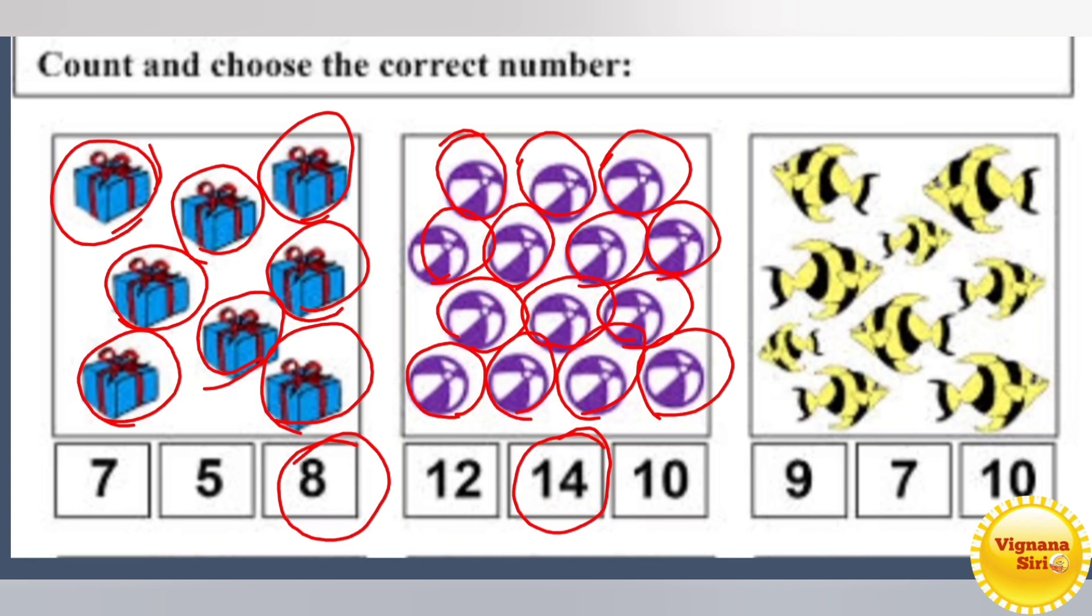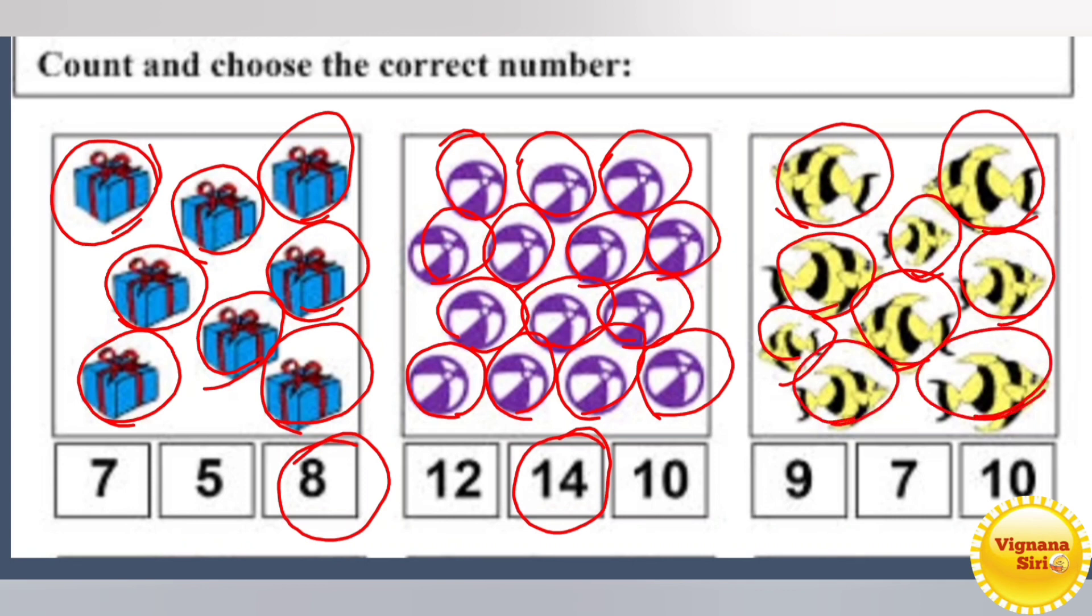Now the next one. What are those? Those are the fishes. Now count the fishes. 1, 2, 3, 4, 5, 6, 7, 8, 9. So there are how many fishes in total? So we have to circle 9.